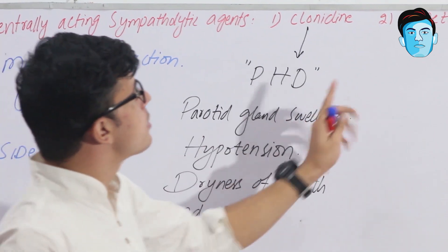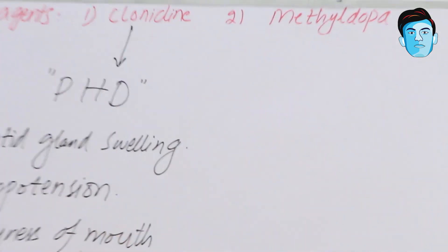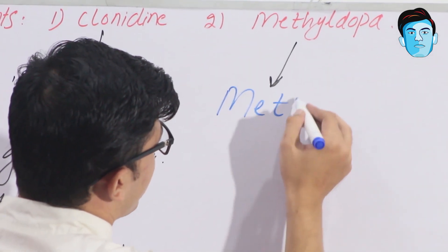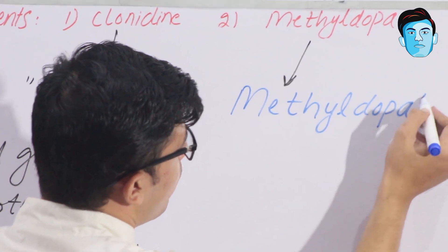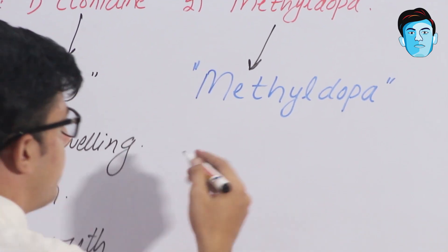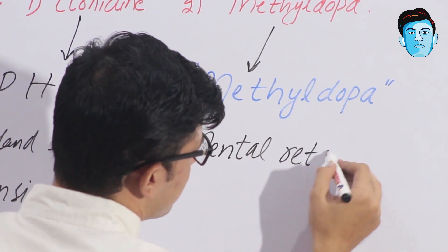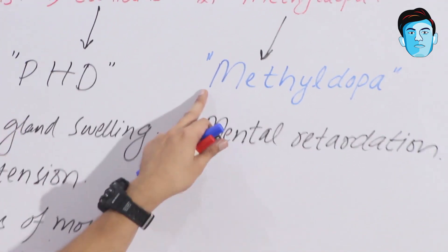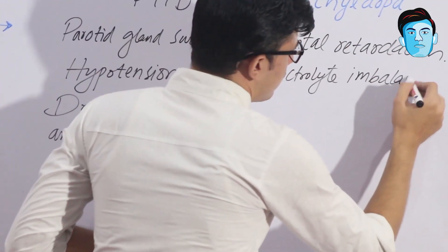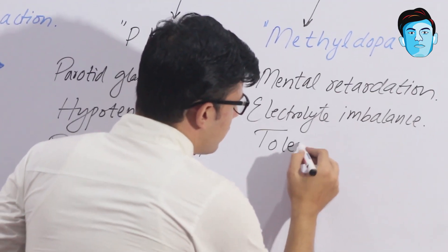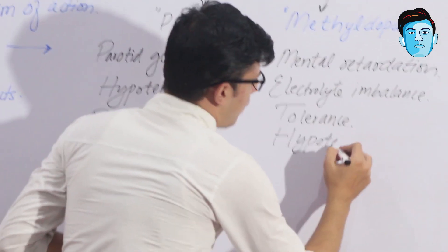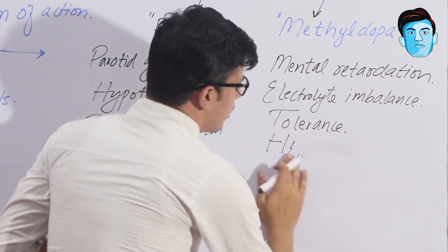For the side effects of methyl dopa, we use a mnemonic based on the word METHYLDOPA, where each letter indicates one side effect. M stands for Mental retardation, E stands for Electrolyte imbalance, T stands for Tolerance, H stands for Hepatotoxicity.